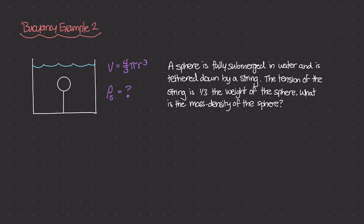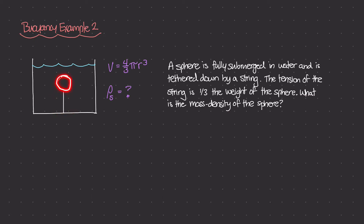The question is asking: the sphere is fully submerged in water and it's tethered down by a string, and the tension of the string is one-third the weight of the sphere. So what is the mass density of the sphere? That's all the information we've been given, and we need to find rho s, the mass density of the sphere.